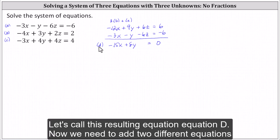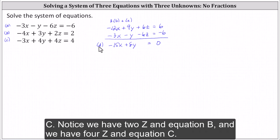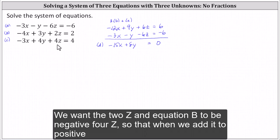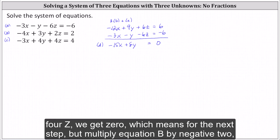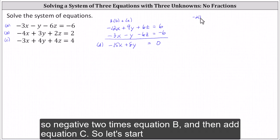Now we need to add two different equations and eliminate the Z term again. This time let's focus on equation B and equation C. Notice we have two Z in equation B and four Z in equation C. We want the two Z in equation B to become negative four Z, so that when we add it to positive four Z we get zero. This means for the next step we'll multiply equation B by negative two. So negative two times equation B, and then add equation C.